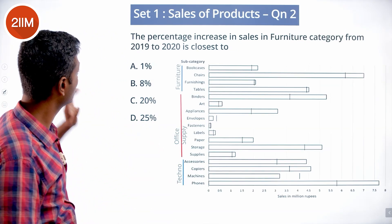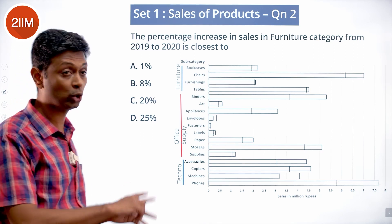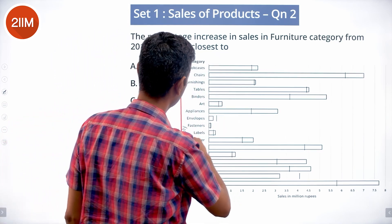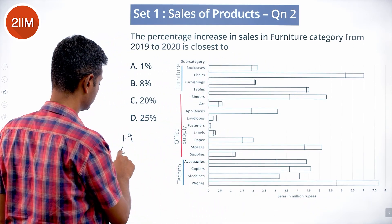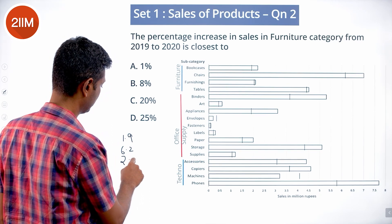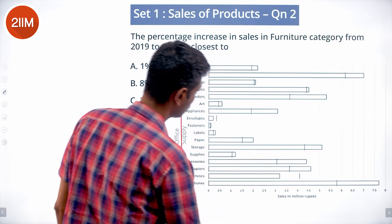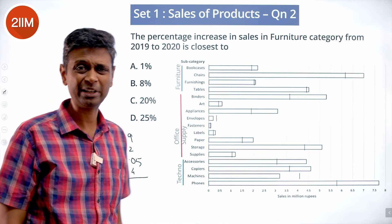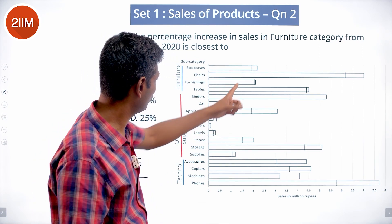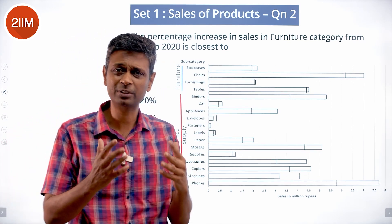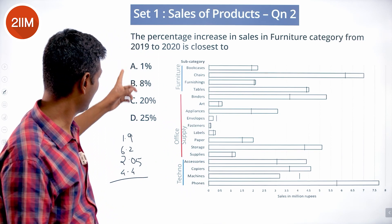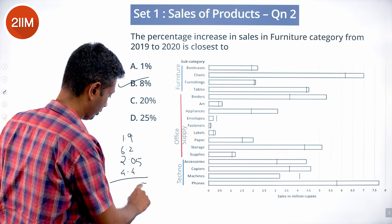Next question: percentage increase in sales in the furniture category from 2019 to 2020. The 2019 numbers are: bookcases 1.9, chairs 6.2, furnishings 2.05, tables 4.4. Looking at the four subcategories, two show practically no change and two show some change. The expected answer range looks to be around 6 percent.